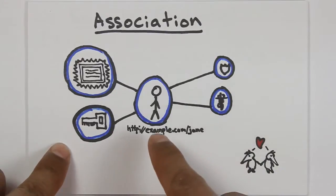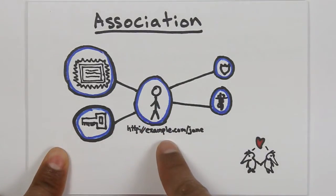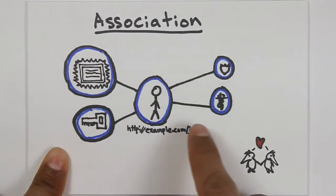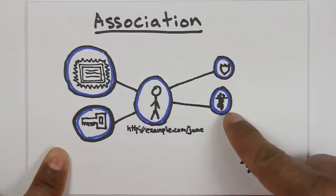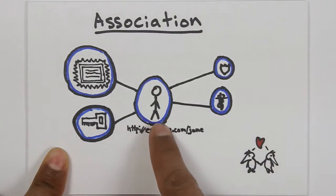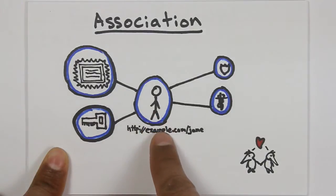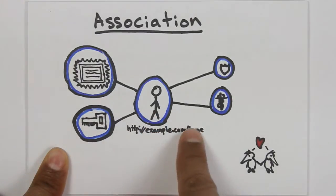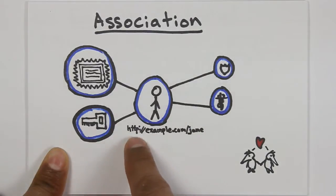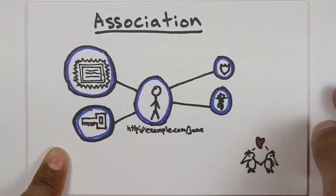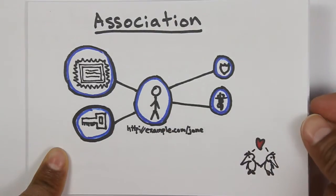By assigning a URL to you, we enable the ability to assign other pieces of information to you. We can start effectively linking credentials to your persona online. Just because you have one URL associated with you doesn't mean that's the only one you can have. You can have many different types of URLs, many identities online. Some can be pseudo-anonymous, some can be almost fully anonymous, and some can be very specific to who you are as an individual.